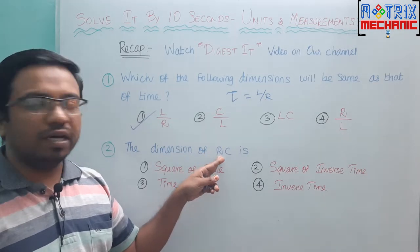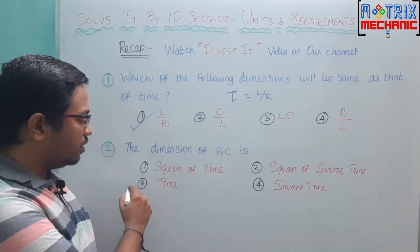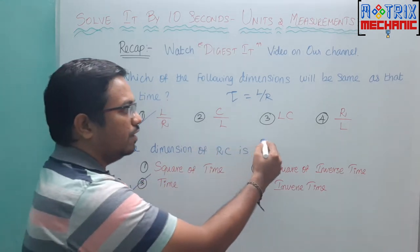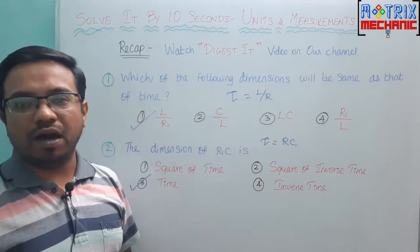R is resistance and C is capacitance. The value of RC is time. I already have the formulas: time is equal to R into C, time is equal to L by R.